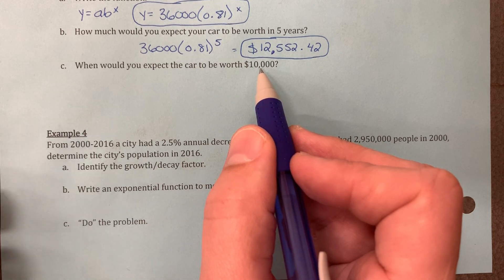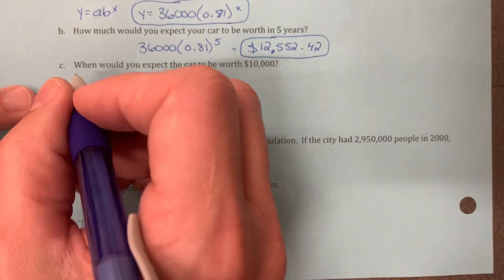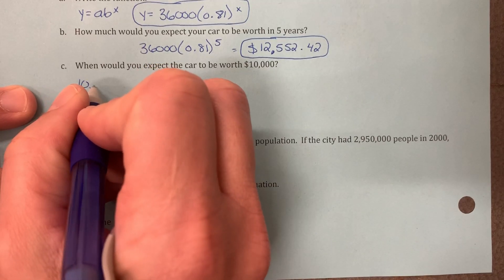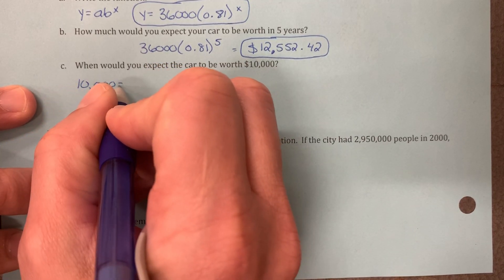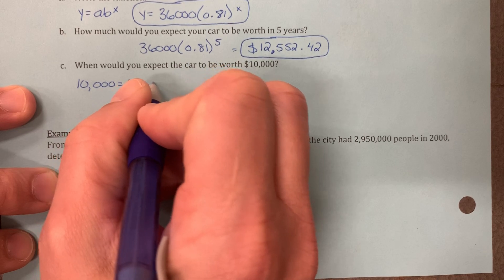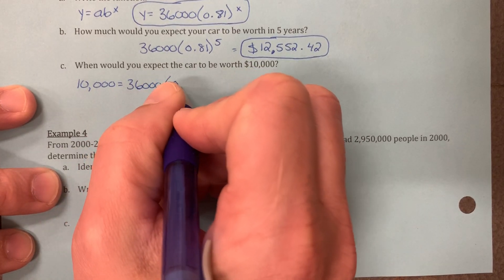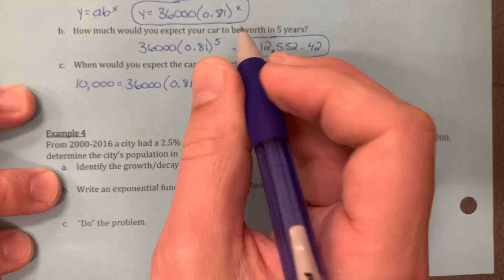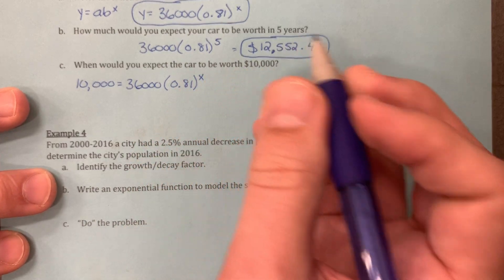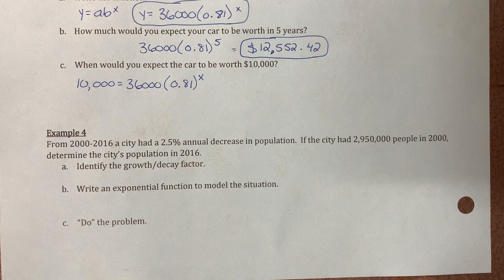So it's like saying we already know the y value, we already know the answer. So here's how we set it up. 10,000 equals the initial amount of 36,000 times the decay of 19% for x number of years. That's what we're trying to figure out.